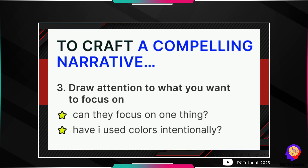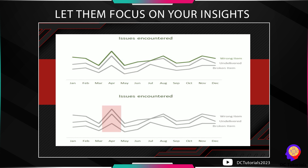The third tip in creating a compelling narrative is to always draw attention to what you want your audience to focus on. Be intentional with the use of colors — in industry practice, red is used as a negative indicator like for decrease or decline, while green indicates positive movement. If your company or client has color branding, use color contrast smartly without violating branding rules. Usually, all other elements are grayed out and only the highlighted parts are colored, leading the audience's attention to the important things.